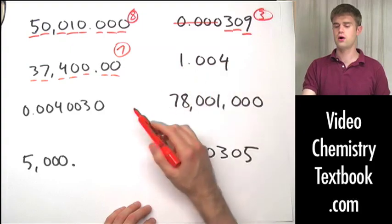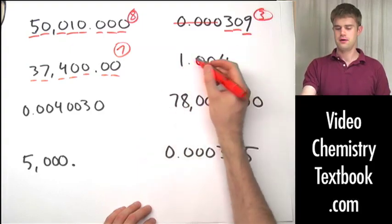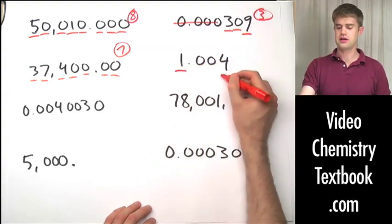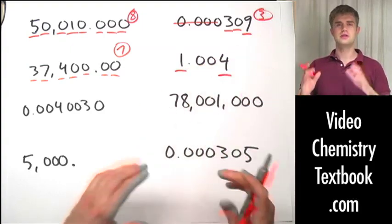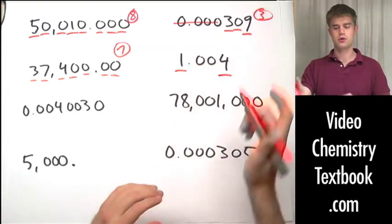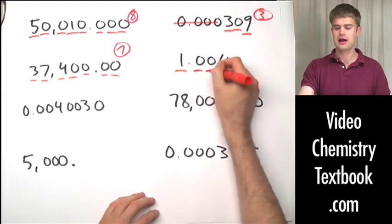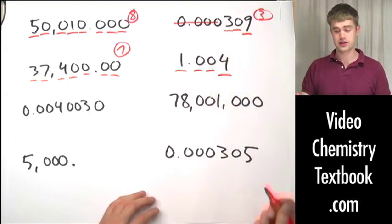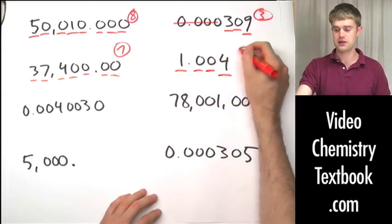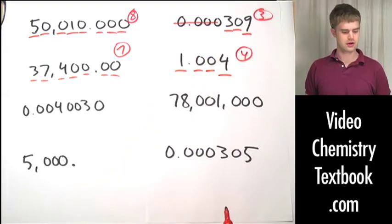1.004 — the non-zero digits are significant, and since the zeros are sandwiched between them, they are also significant, which means there are four total significant figures.